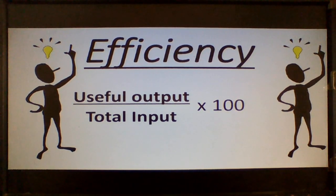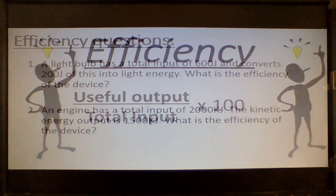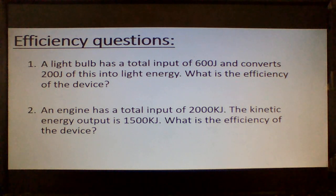We're always being told to be more efficient, so let's look at this wonderful equation for efficiency. Two questions to throw in your direction. A light bulb has a total input of 600 joules and converts 200 joules of this into light energy. What's the efficiency of the device?